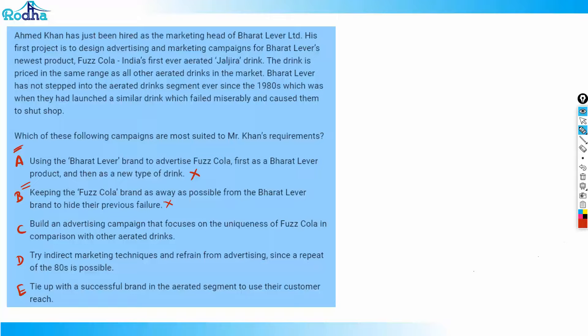Option C says: build an advertising campaign that focuses on the uniqueness of First Cola in comparison with other aerated drinks. That's a good, positive option. When you take up any product, you should highlight its positive aspects — why this drink is unique, why people should drink it. A positive campaign about your own product should always be preferred over negative campaigns about other things. So option C is a strong positive candidate — we'll keep it for now.